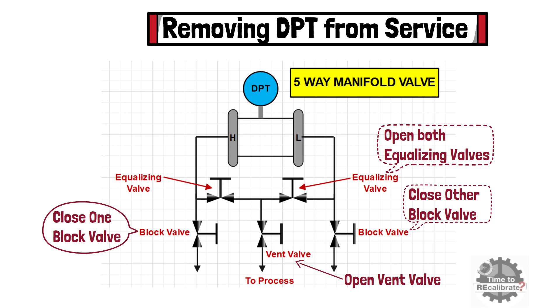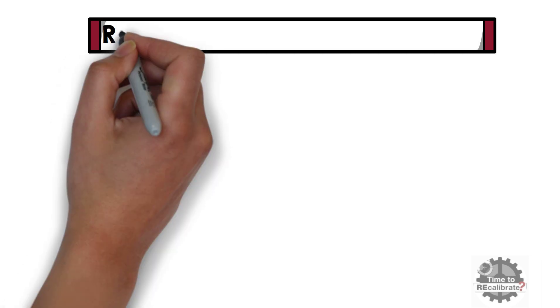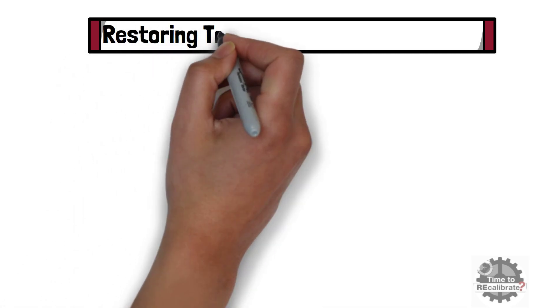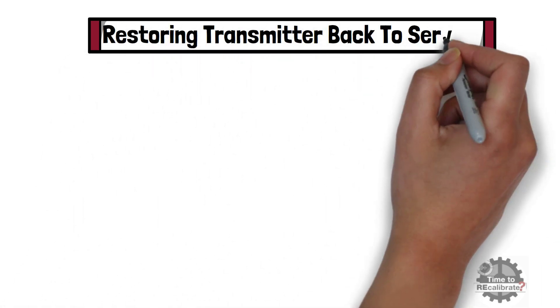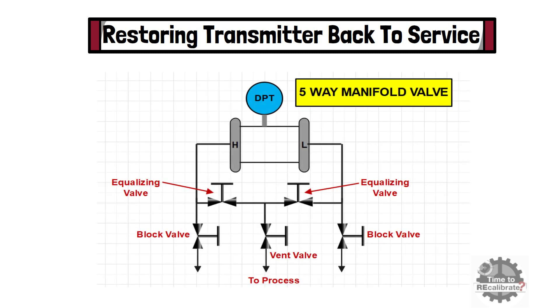In this section, I am going to show how to put the differential pressure transmitter back into service when 5-way manifold valves are connected. To put the DPT back into service, first of all, close the vent valve.